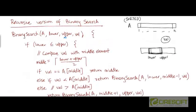When we call this function, we will call binary search on array a, with the lower parameter being 1, the upper parameter being n, and val being the value that we are searching for.